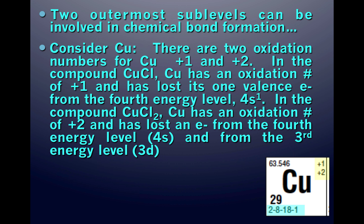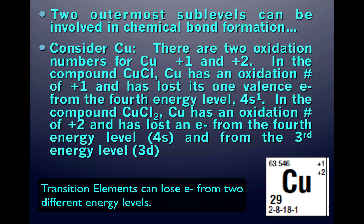In a different compound CuCl₂, copper has an oxidation number of +2, which means it has lost two electrons — one from the fourth energy level (4s) and another from the third energy level, the 3d sublevel. Transition elements can lose electrons from two different energy levels.